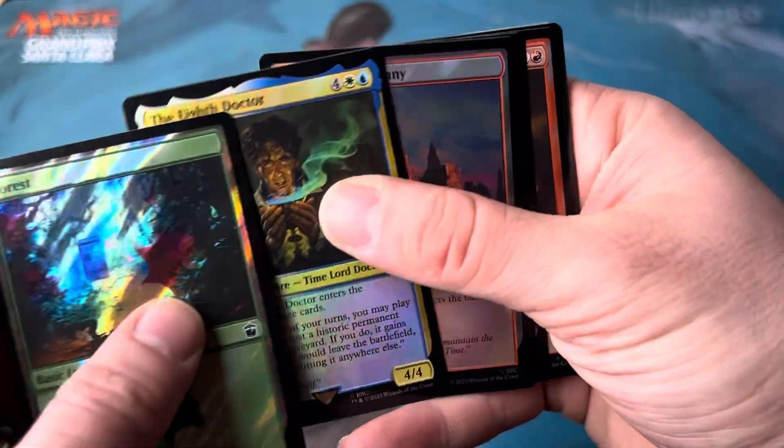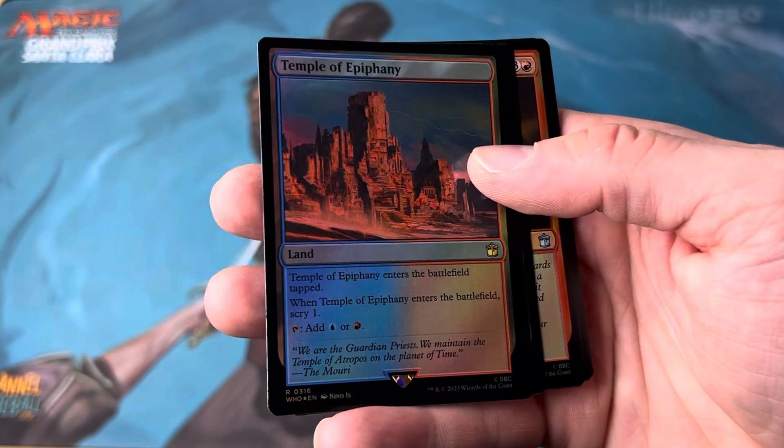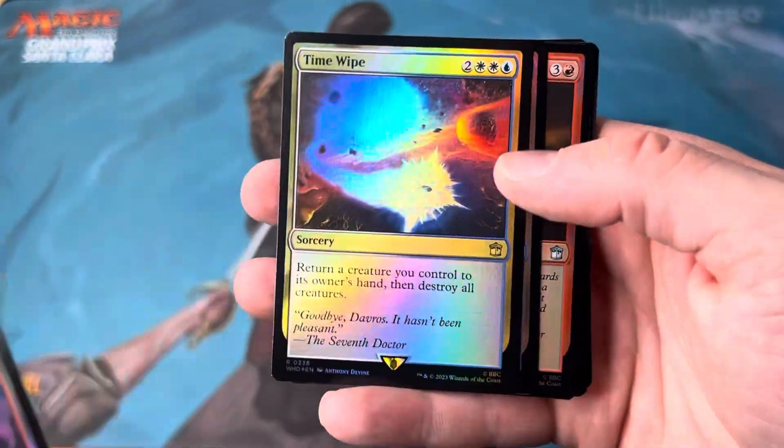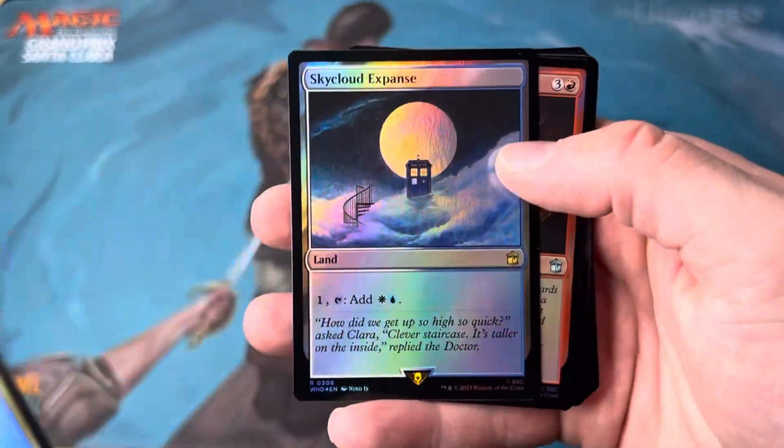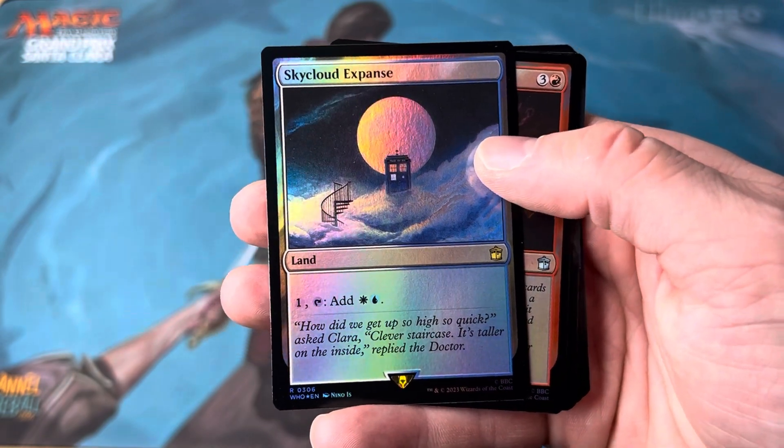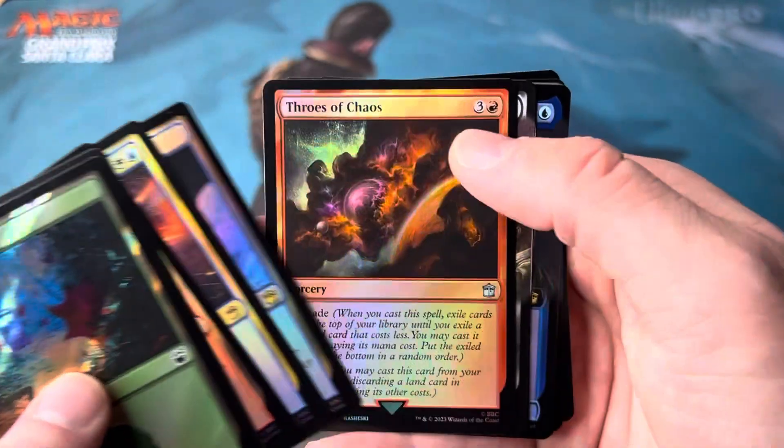Beautiful forest. The eighth doctor. Temple of Epiphany. Oh my gosh. These are just beautiful. Time wipe. Sky cloud expanse. Awesome. Absolutely awesome.